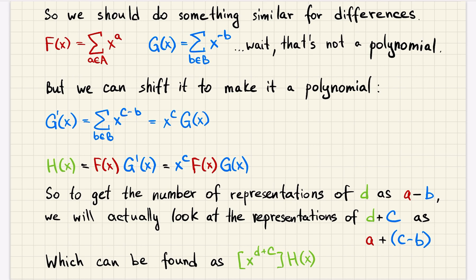where c is some bound on, like upper bound on all the numbers in b. For example we can take maximum element from b, but we can take something bigger if we want. So it's easy to see that actually we defined this function g prime as x to the power of c multiplied by function g which wasn't a polynomial.